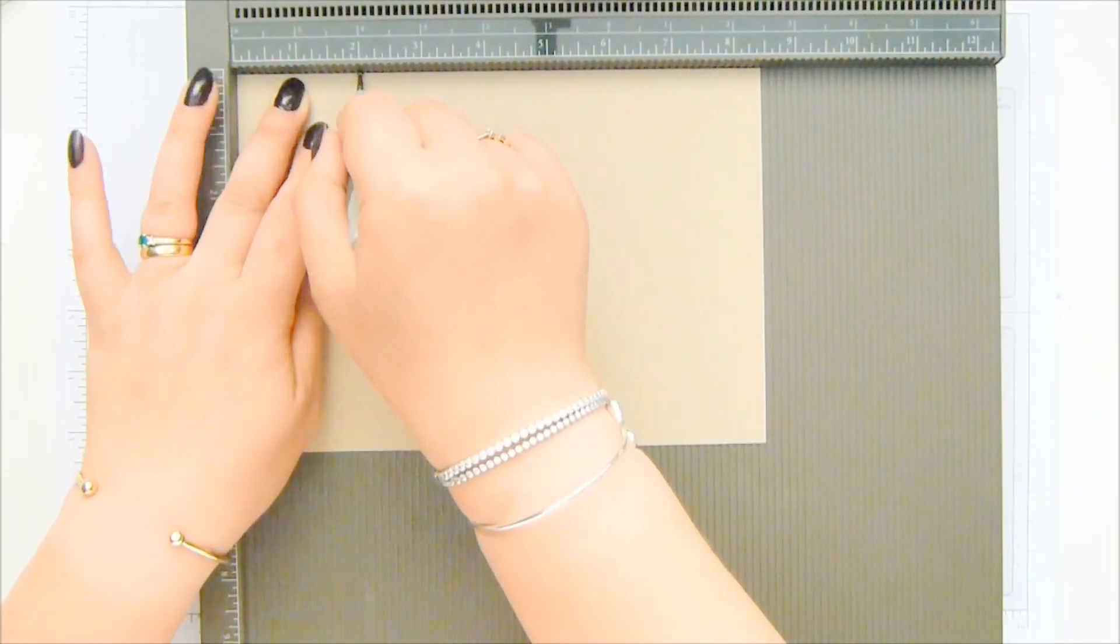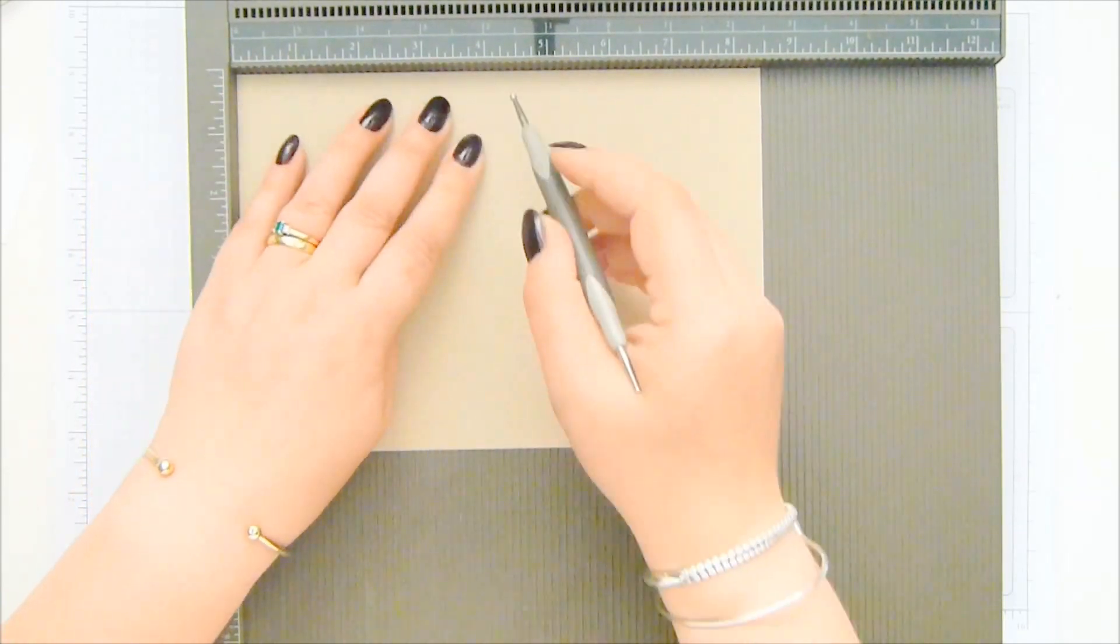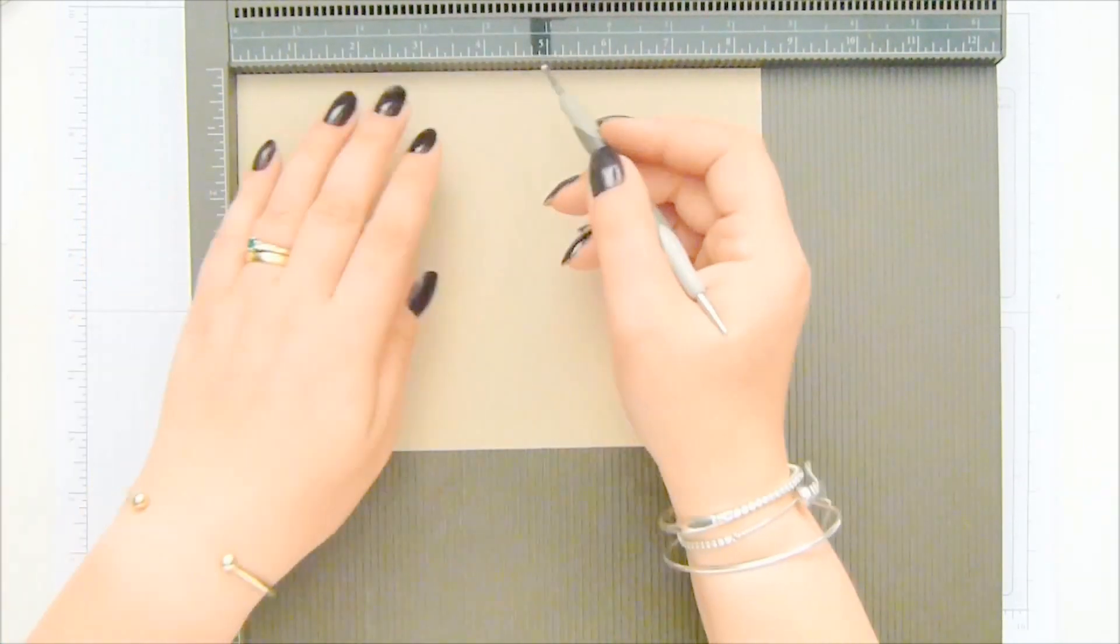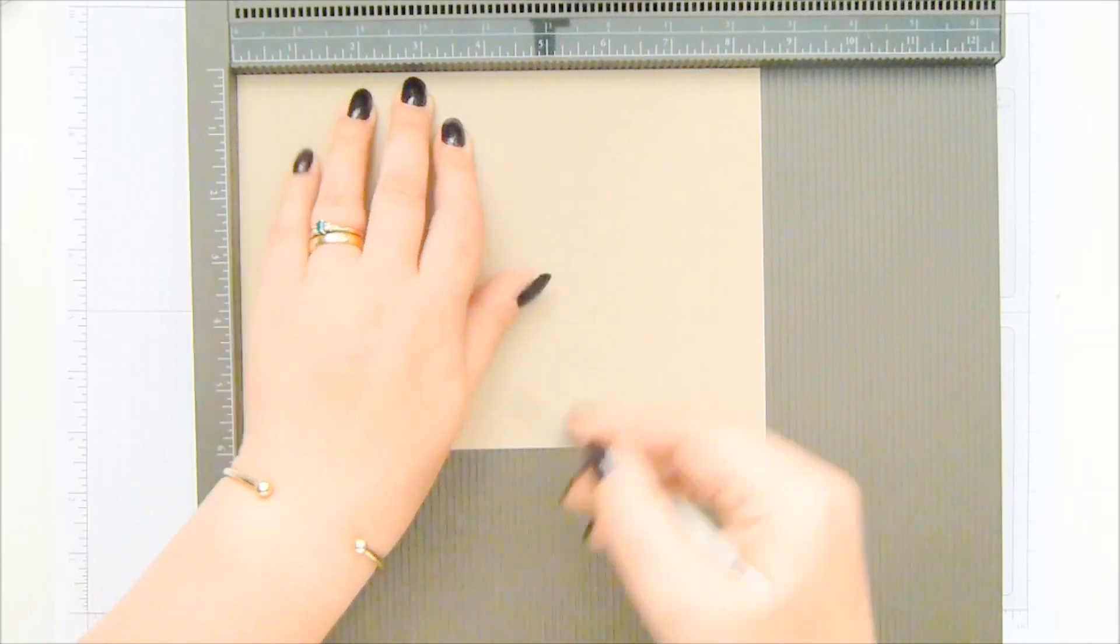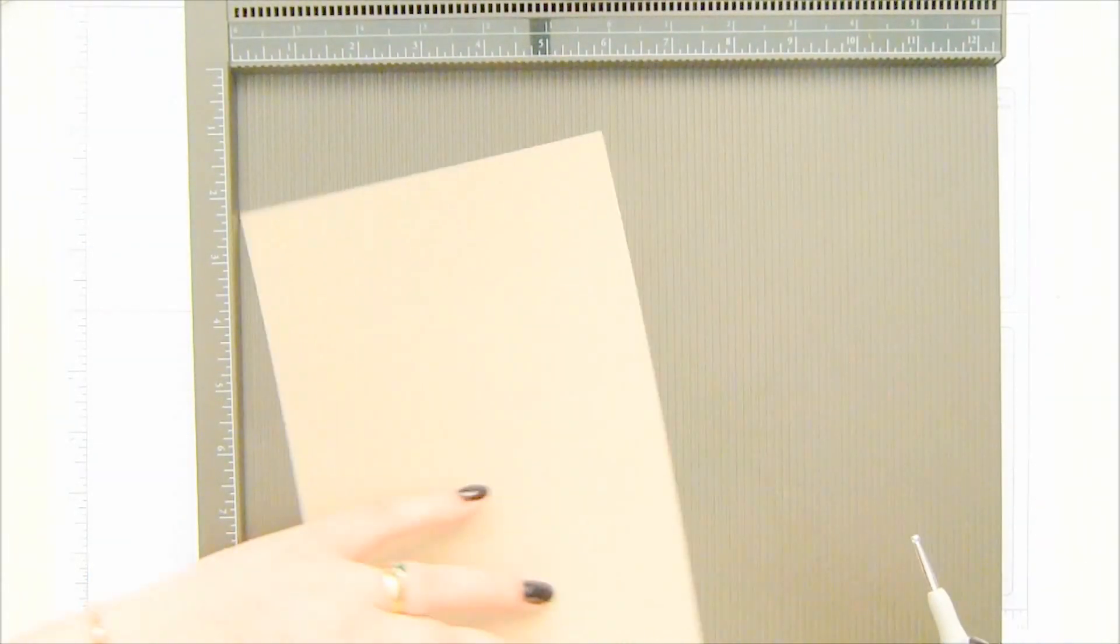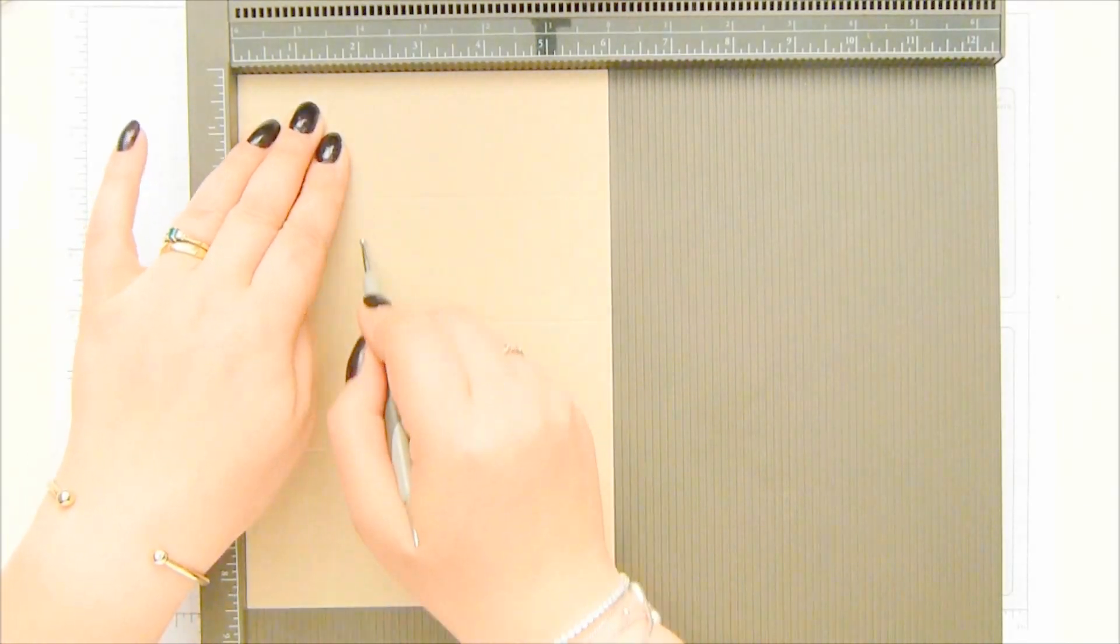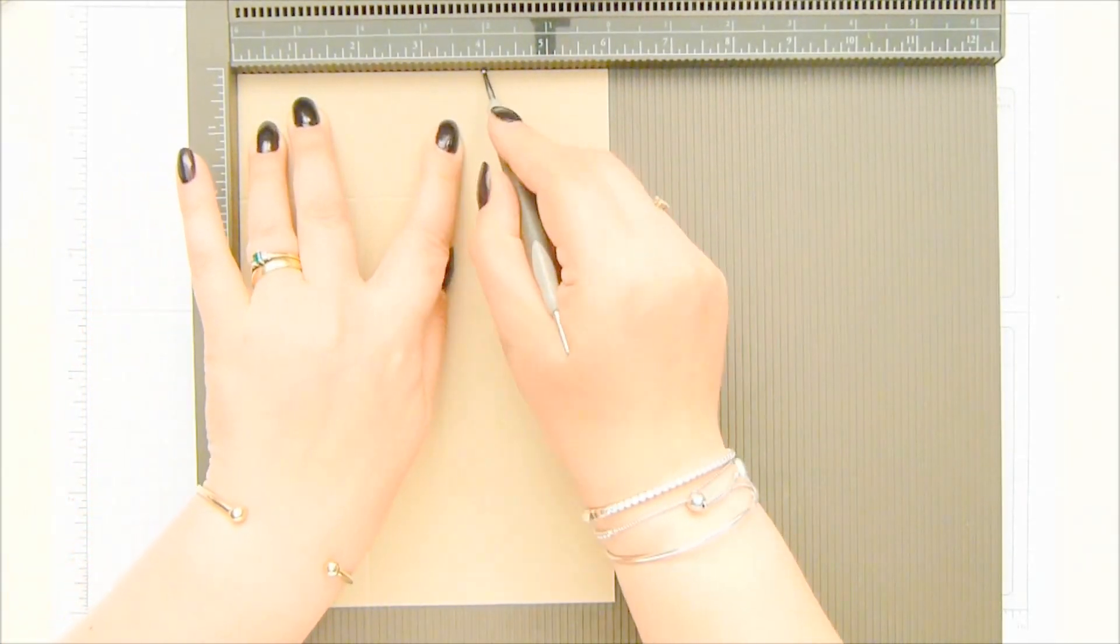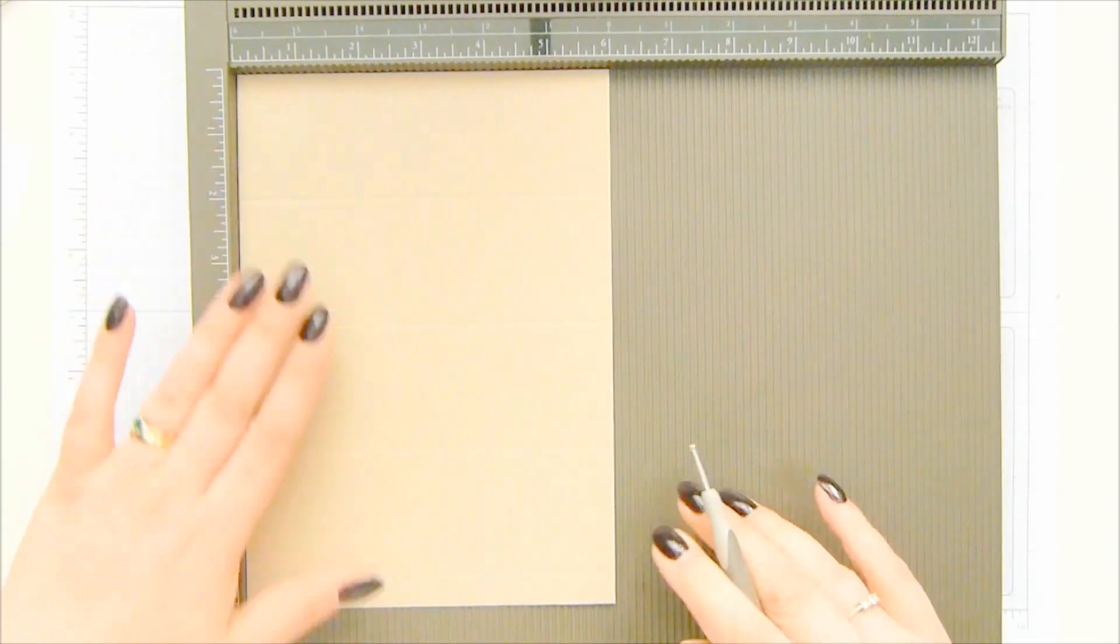On the long side, we're going to score it every two inches. So two, four, six, and eight, which in metric is five, ten, fifteen, and twenty. And then on the short side, score it at two inches and four inches, which is five and ten centimeters.